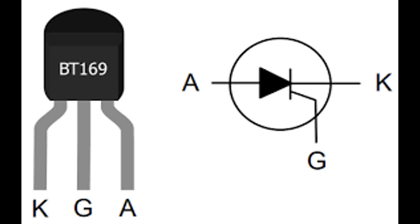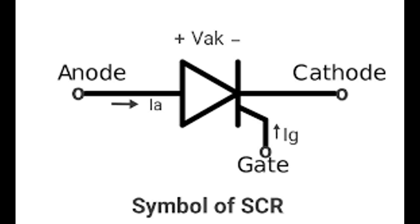Operation states — Forward blocking mode: when a positive voltage is applied to the anode relative to the cathode, junctions J1 and J3 are forward biased but J2 is reverse biased, preventing current flow through the device. Forward conducting mode: when a positive voltage is applied to the gate relative to the cathode, it injects charge carriers into the P2 layer, reducing the barrier at J2, triggering the thyristor and allowing current to flow from the anode to the cathode.